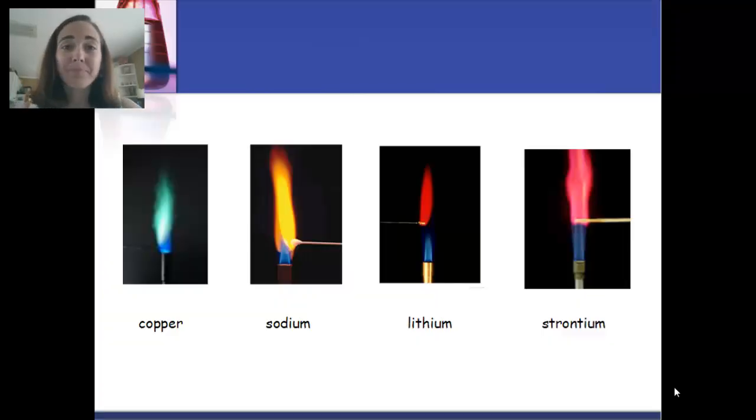Alright, here we go. Remember in the activity yesterday you saw for example that copper produces a green flame while lithium compounds produce that really bright pink reddish colored flame. Different elements do have characteristic colors and it's because of the behavior of their electrons.